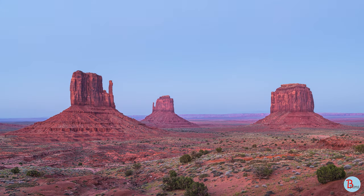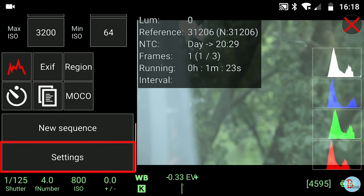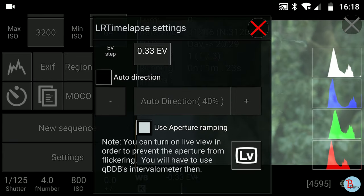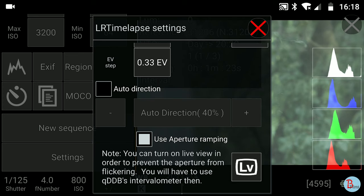Finally, there is aperture ramping, which is more of a general challenge when doing holy grail timelapses and not necessarily associated with interval ramping. If aperture ramping happens fast, you will have noticeable flickering and possibly vignetting that most deflickers will have a hard time dealing with. Preferably, you would not want to use aperture ramping and keep it constant throughout your timelapse. But if you have to use it, you can try to deflicker it and perhaps crossfade that problematic section in post-processing.